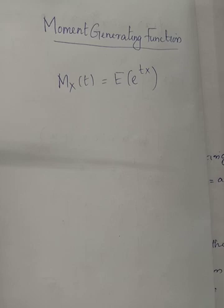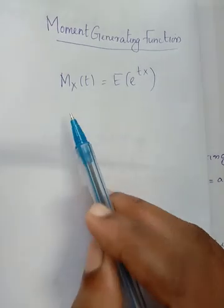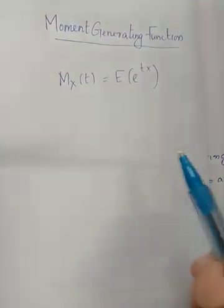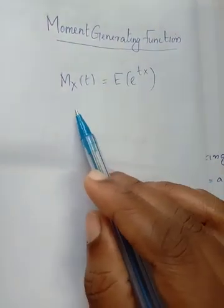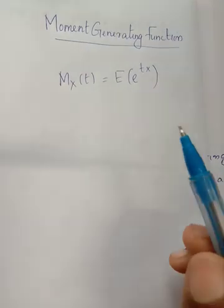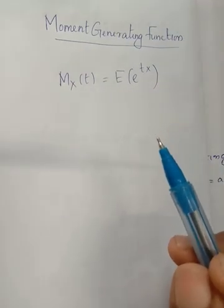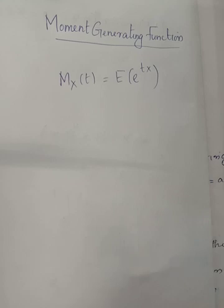First, what is the moment generating function? Here x is a random variable. We will define the moment generating function. M_X(t) is equal to the expectation of e raised to tx.